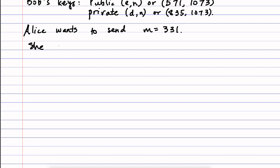So to do this she has to encrypt it in order to send it to Bob. And to encrypt it she computes some massive power of 331, namely 331 raised to the power of Bob's public key, mod 1073.